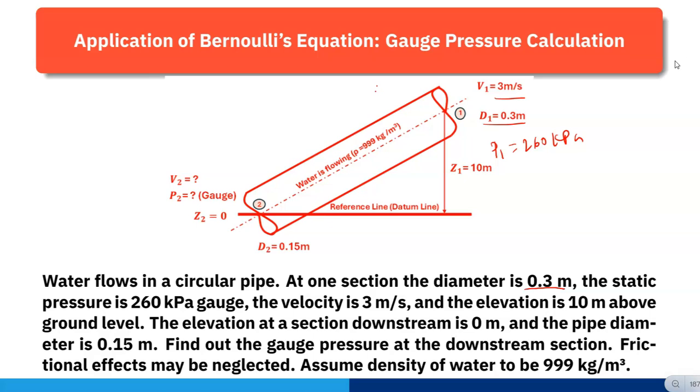The elevation at section downstream is 0 meter, so z2 is 0, and the pipe diameter is 0.15 meter. Find out the gauge pressure at the downstream section. Frictional effects may be neglected.